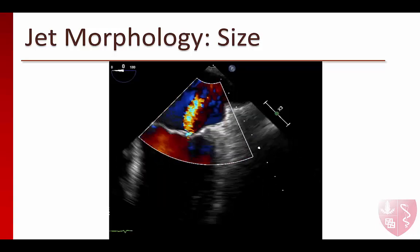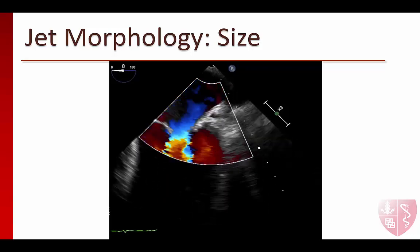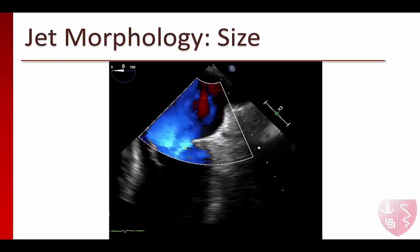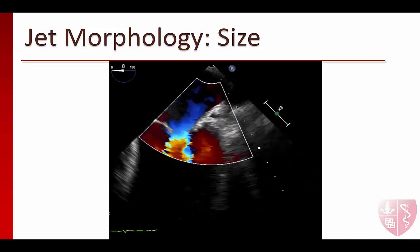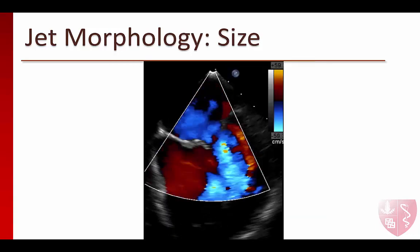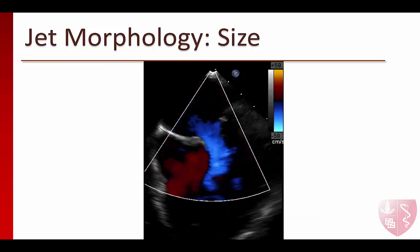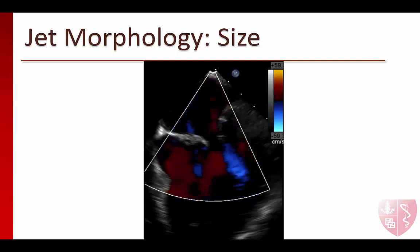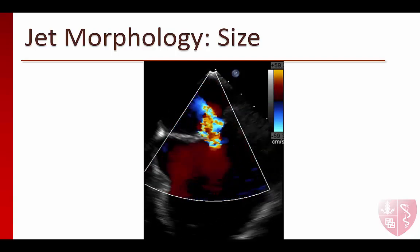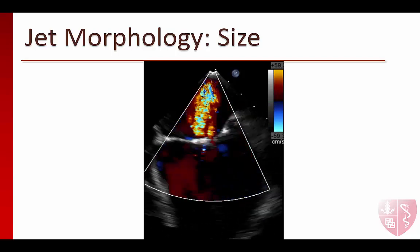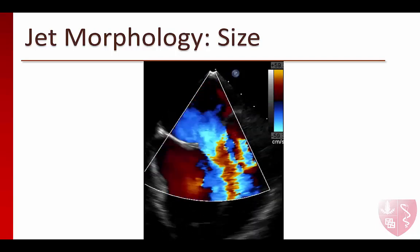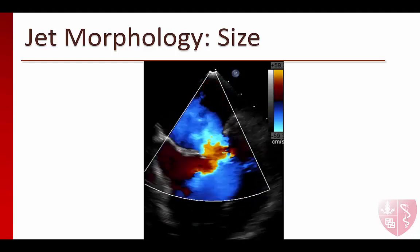This is a mid-esophageal four-chamber view rotated to the left to show only the left atrium and left ventricle. There is a small central regurgitant jet consistent with mild MR. This is the image we saw earlier of a dilated left heart, poor LV function, and dilated mitral valve annulus. Now that we place color flow over the valve, we see that our suspicion was confirmed and that there is indeed moderate to severe MR.